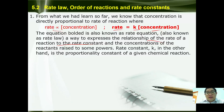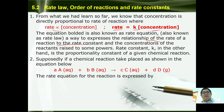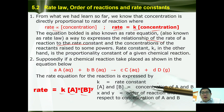Rate constant k, on the other hand, is the proportionality constant of a given chemical reaction. So if a chemical reaction takes place as shown, we have aA plus bB gives cC plus dD. The rate equation for the reaction can be expressed as rate equals k times [A]^x times [B]^y, where k is the rate constant, [A] and [B] are the concentrations of A and B, and x and y are the order of reaction with respect to the concentrations of A and B.